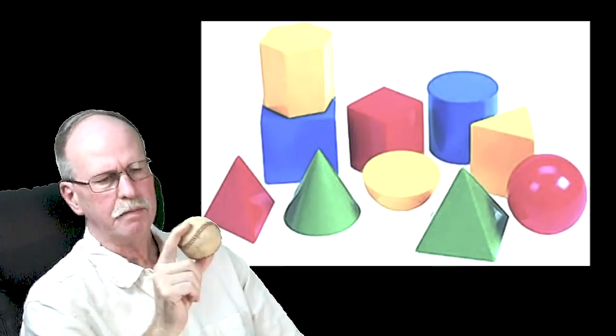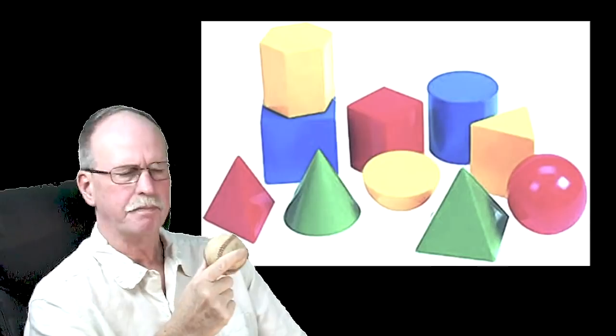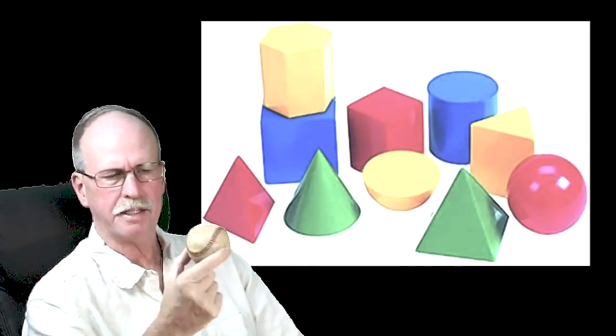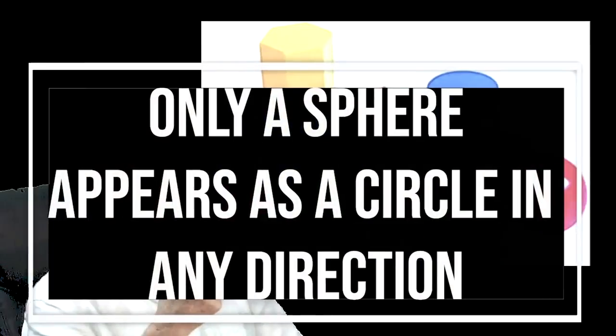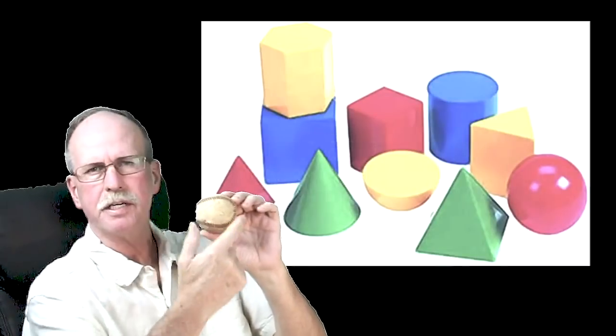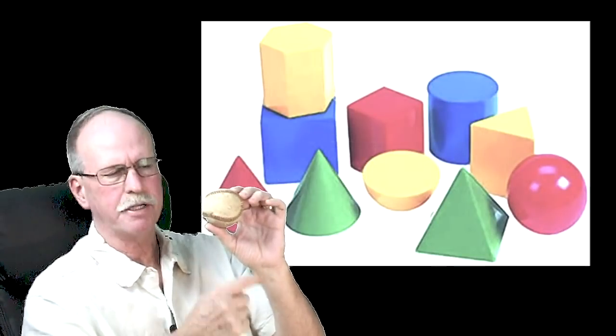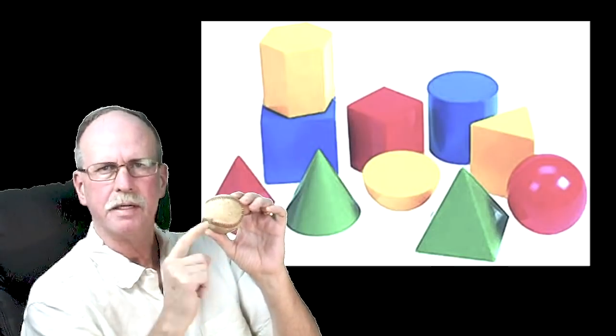For example, here is one of my son's baseballs. I think that everybody can look at this baseball and understand that this is a three-dimensional object. When I rotate it, or move it in any direction, what do you see? You literally see a two-dimensional circle, but you know that this is not a two-dimensional object because you know the center part of the baseball is closer to you than the edge of the baseball.